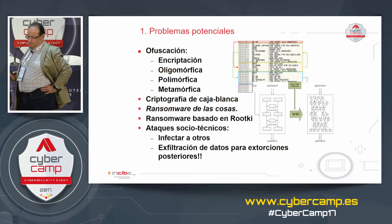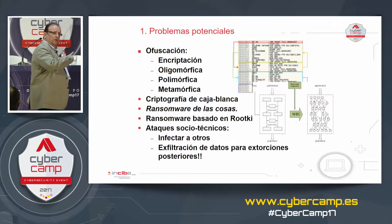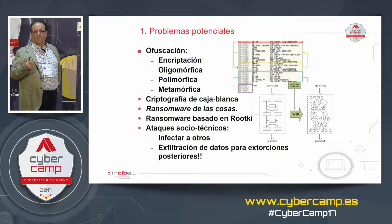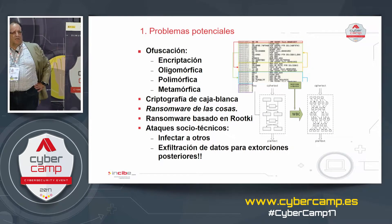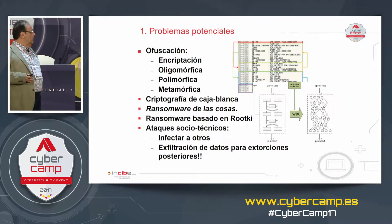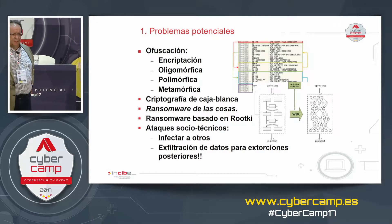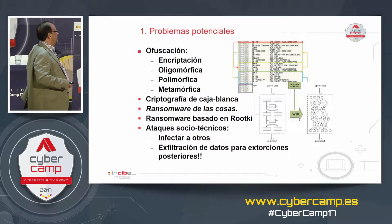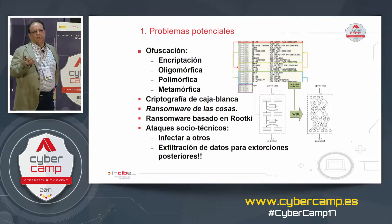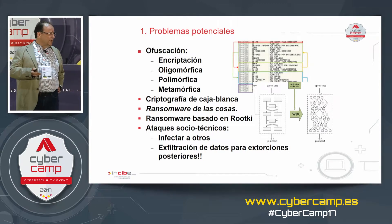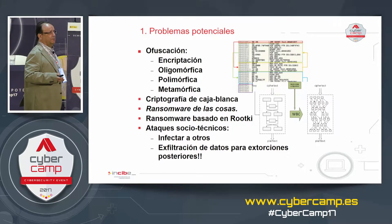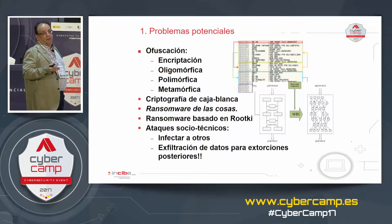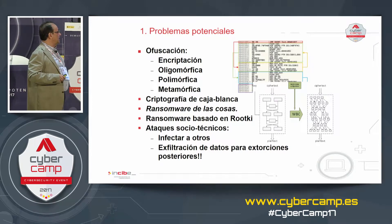From the point of view of detection, one of the main problems associated with behavior analysis is obfuscation — altering the code of ransomware so that variants are functionally equivalent but visually different. This technique is used to defeat antivirus signatures for both ransomware and malware in general. When this technique is used, the signature is no longer valid.